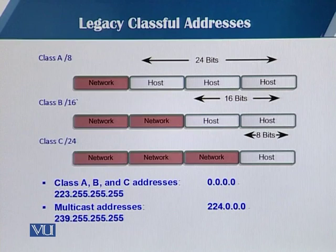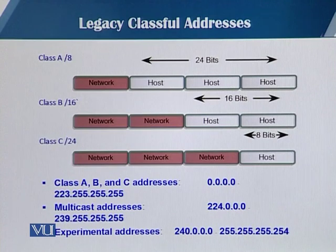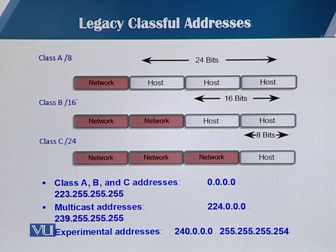Then we have the multicast addresses — these are also reserved addresses. The range of multicast addresses starts from 224 and ends at 239. And then we have the experimental addresses, which are again reserved for future use, and they range from 240.0.0.0 all the way to 255.255.255.254.